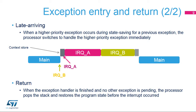When an interrupt arrives, the processor first saves the program context before executing the interrupt handler. If the processor is performing this context-saving operation when an interrupt of higher priority arrives, the processor switches directly to handling the higher priority interrupt when it finishes saving the program context. Then tail-chaining will be used prior to executing the IRQB interrupt service routine. When all exception handlers have been run and no other exception is pending, the processor restores the previous context from the stack and returns to normal application execution.